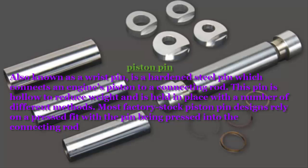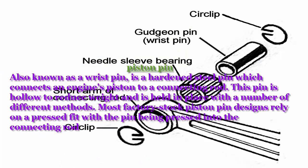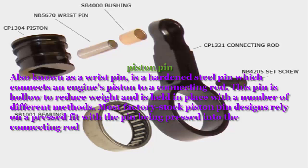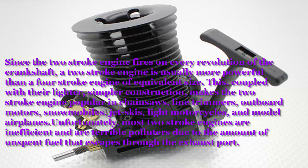Piston Pin: Also known as a wrist pin, it is a hardened steel pin which connects an engine's piston to a connecting rod. This pin is hollow to reduce weight and is held in place with a number of different methods. Most factory stock piston pin designs rely on a pressed fit, with the pin being pressed into the connecting rod.